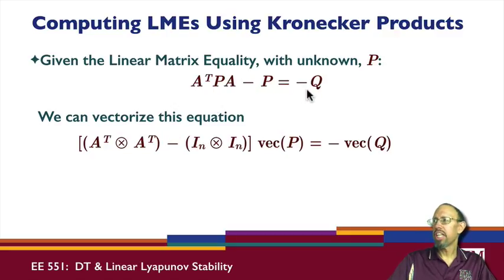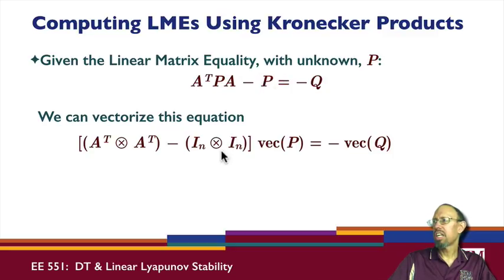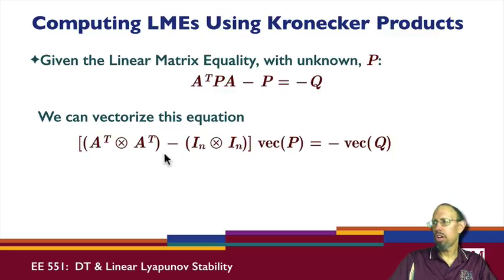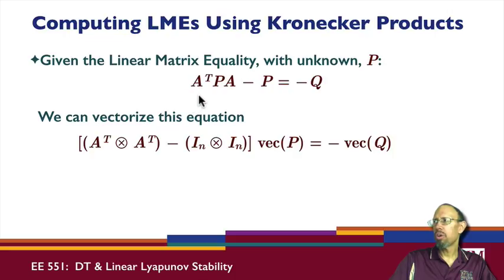For the discrete-time Lyapunov equation, notice we have A^T P A on one side. The A comes to the other side transposed, and the A^T also appears with two identity matrices. Vectorizing both sides and applying the Kronecker product property gives a linear equation for VEC(P). Solving this linear equation and then un-VEC-ing yields P. This is how we compute solutions to the linear matrix equalities for both continuous and discrete-time Lyapunov equations.